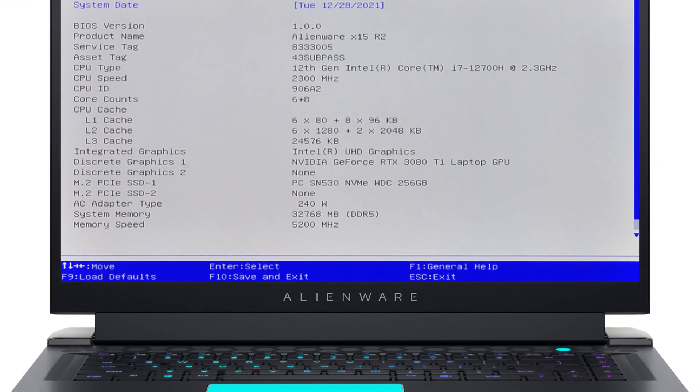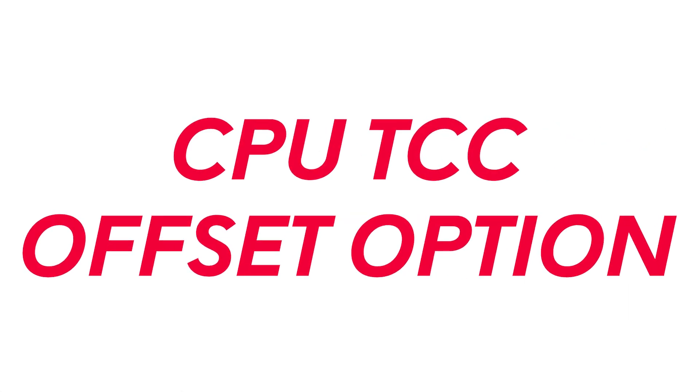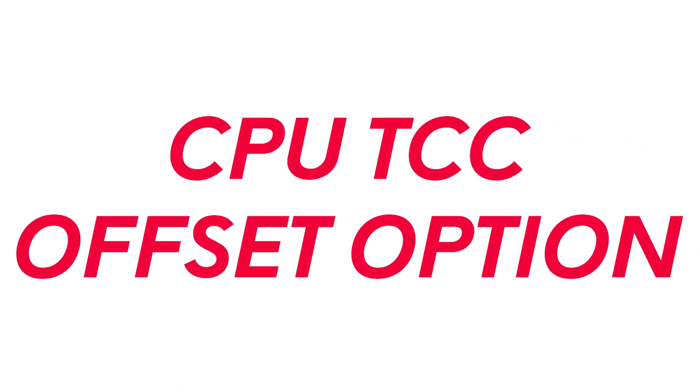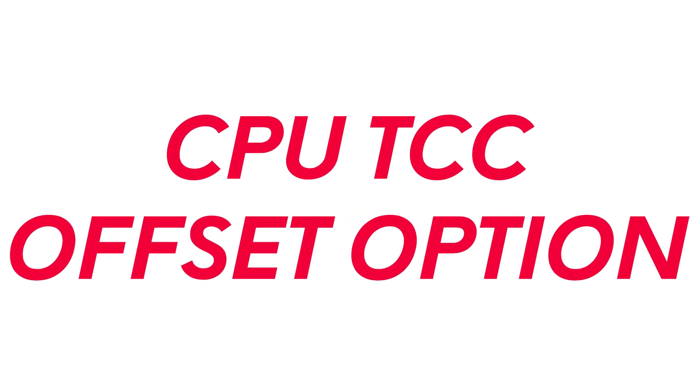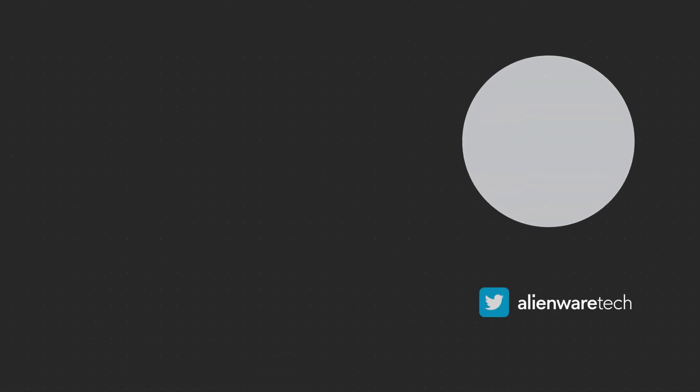For AMD Ryzen CPUs, look for the CPU TCC Offset option. The highest temperature that the CPU can reach will now be limited by the value set on this process.